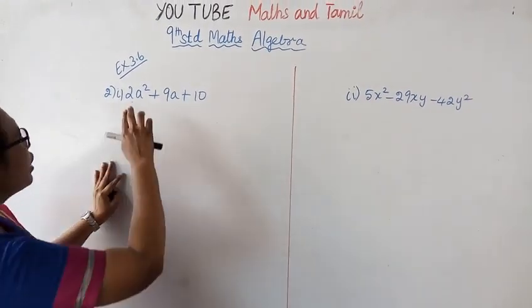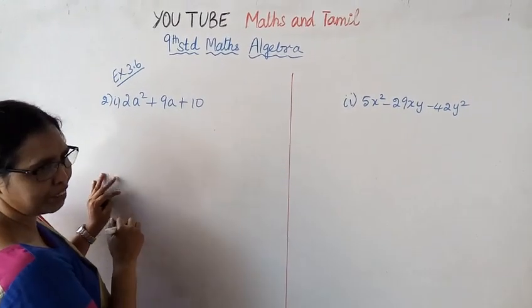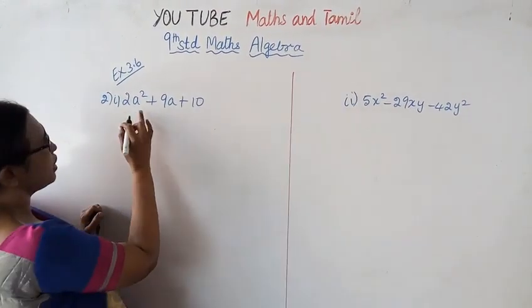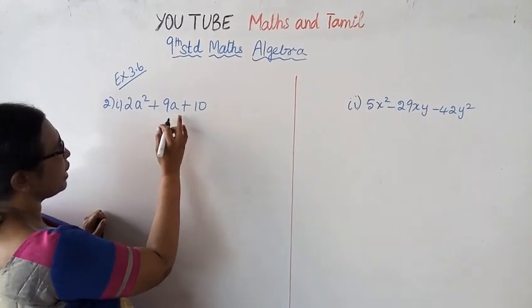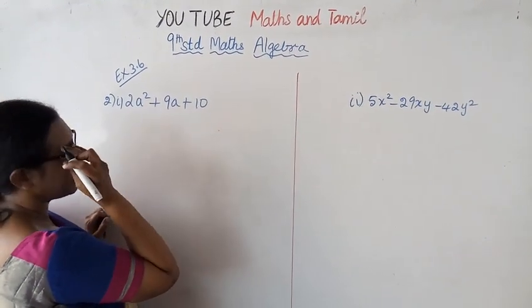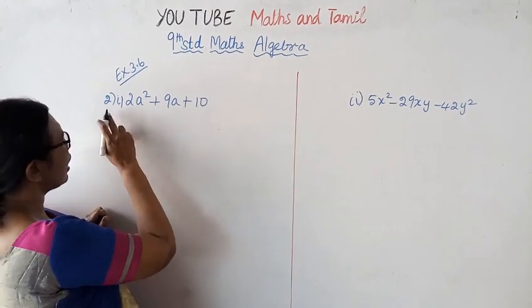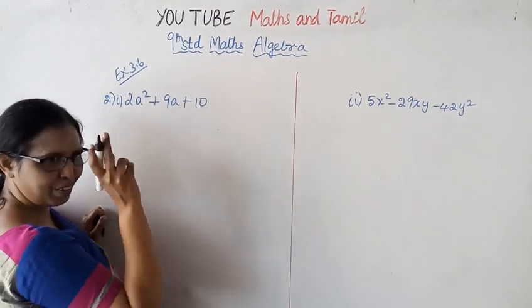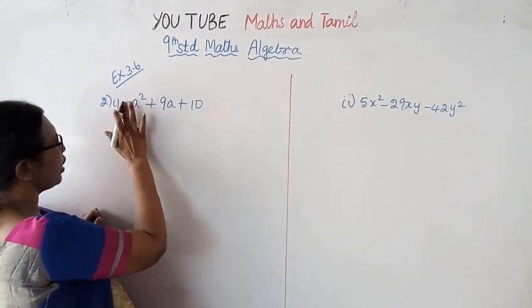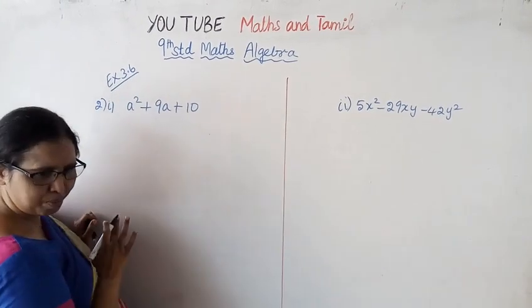The first problem is the first subdivision. We need to factorize: a squared plus 9a plus 20. This is a quadratic expression and we need to find the order of the terms before splitting the middle term.